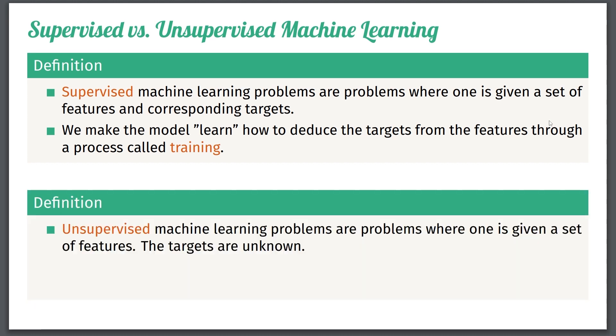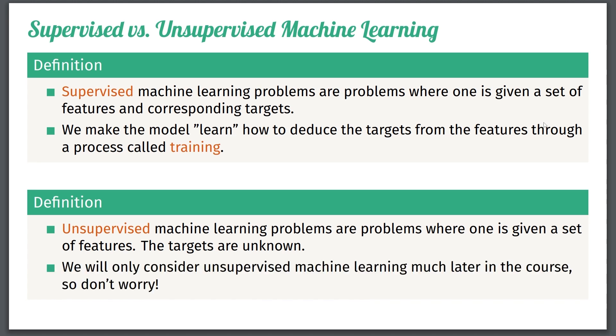Unsupervised machine learning. These are problems where one is given a set of features, but you don't know the targets. And in such a problem, you have maybe broader views like understanding the features, or essentially clustering the features, or finding outliers, and so on. But don't worry, for the majority of this course, and definitely for the first part, we'll only consider supervised machine learning. It's only in the latter parts of the course that we'll consider unsupervised machine learning, so you don't need to think about this much at all. I just want you to have heard this distinction between supervised and unsupervised. And of course, this will be much clearer once we get into the actual models and problems.